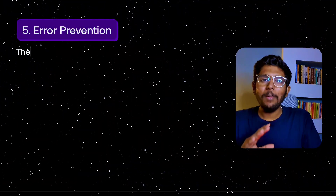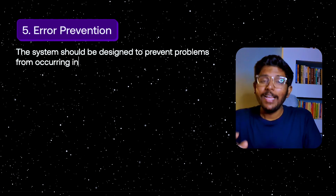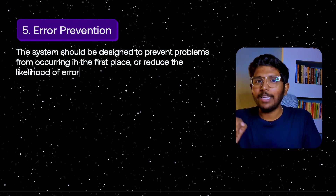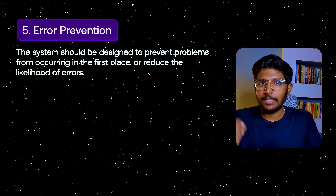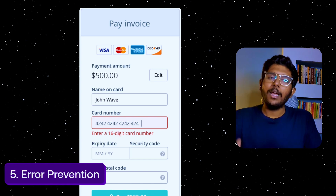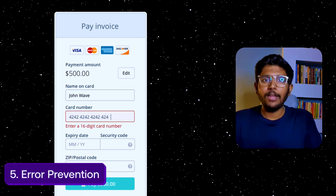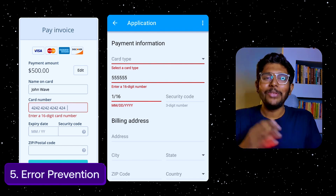Fifth principle: Error Prevention. Design to prevent problems from occurring, or at least minimize them. For example, if users add payment information and make an error, make sure you allow them to correct it. If users encounter errors without correction options, they will be frustrated. Having options to correct errors leads to a smooth and less frustrating experience.